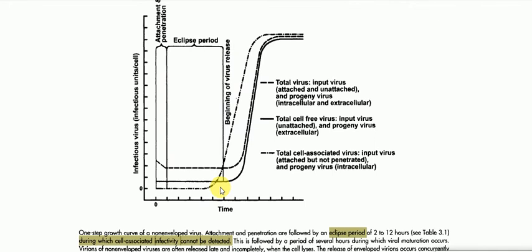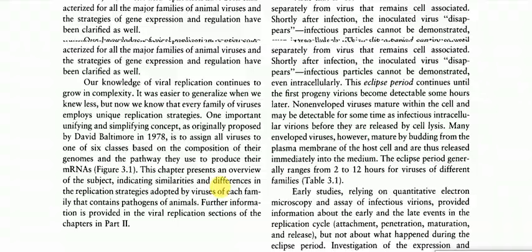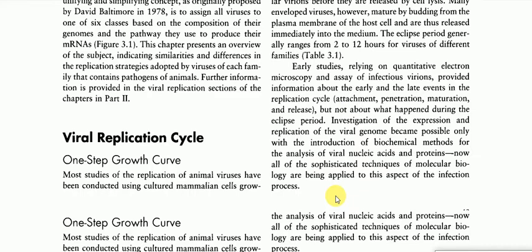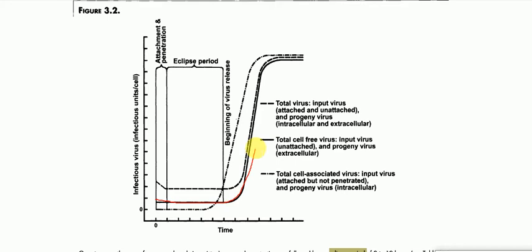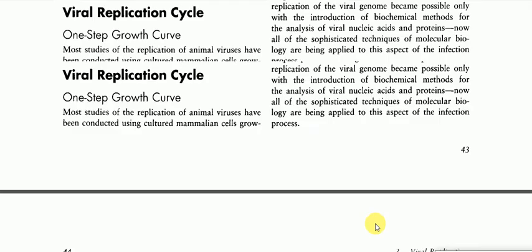The Viral Replication Cycle and One-Step Growth Curve: Most studies of the replication of animal viruses have been conducted using cultured mammalian cells growing either in suspension or in a monolayer adhering to a flat surface. The classic studies defined the one-step growth curve, in which cells in a culture are infected simultaneously using a high multiplicity of infection, and the increase in infectious virus over time is followed by sequential sampling and titration, as shown in figure 3.2. Viruses free in the medium can be titrated separately from cell-associated viruses.